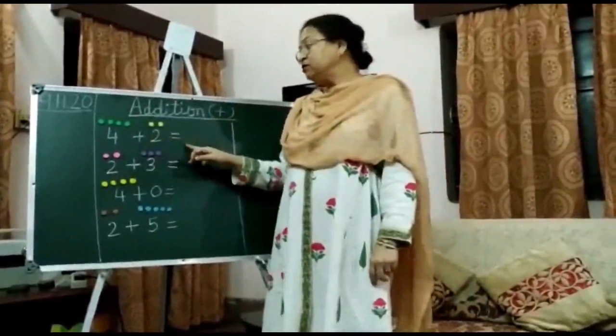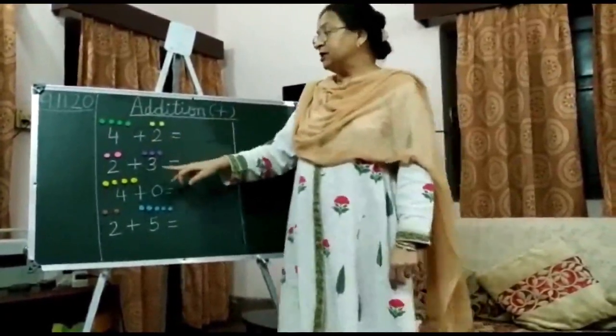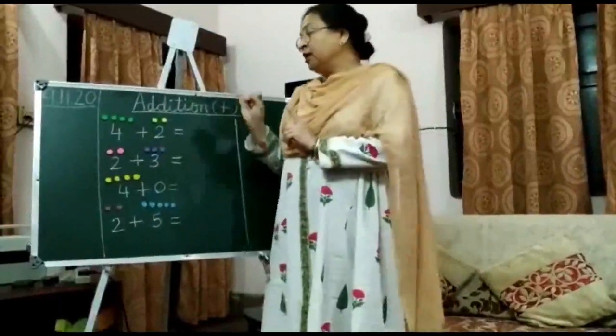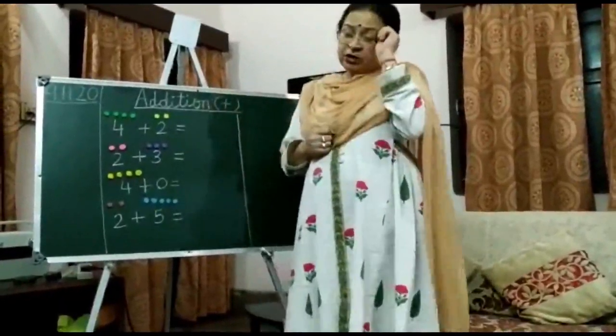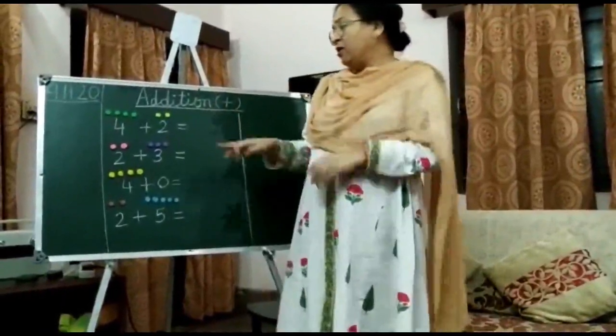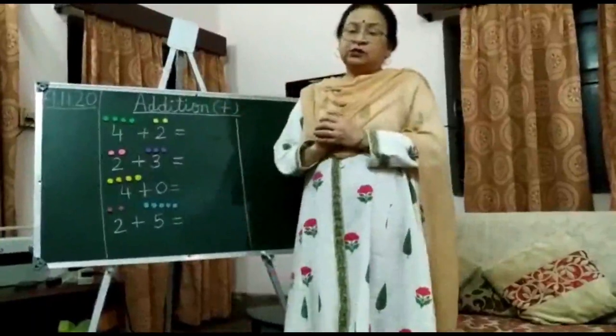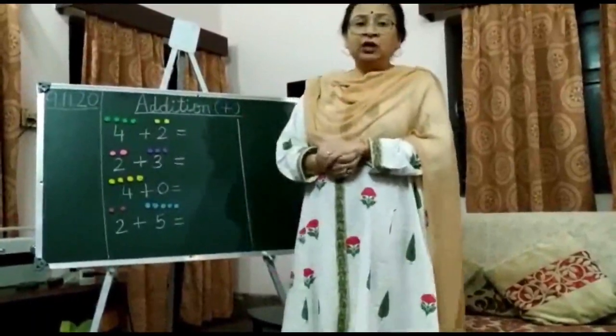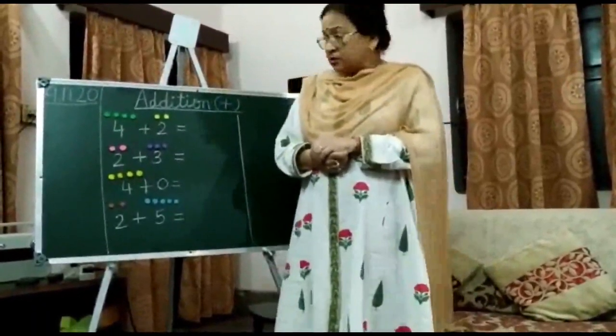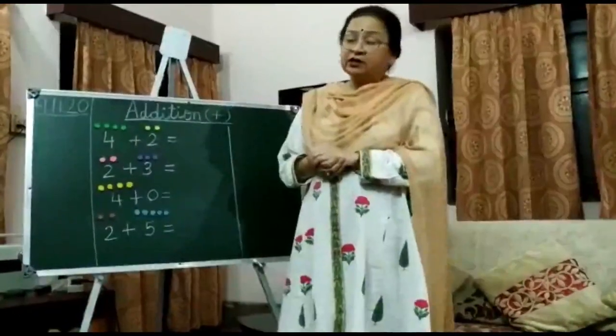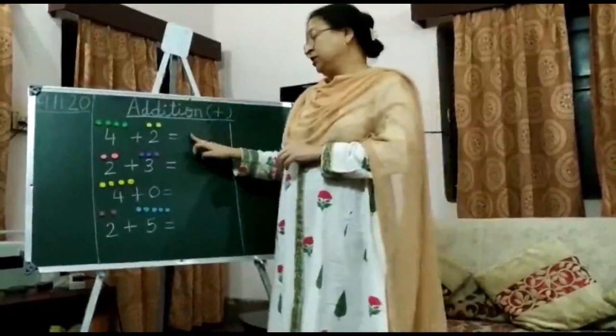When a sum is given to you, read it, then tick the bigger number and lock it in your mind. The second number you will count on your fingers. Rule number 3 is that you will do forward counting, and when you get the answer, you will write it here.